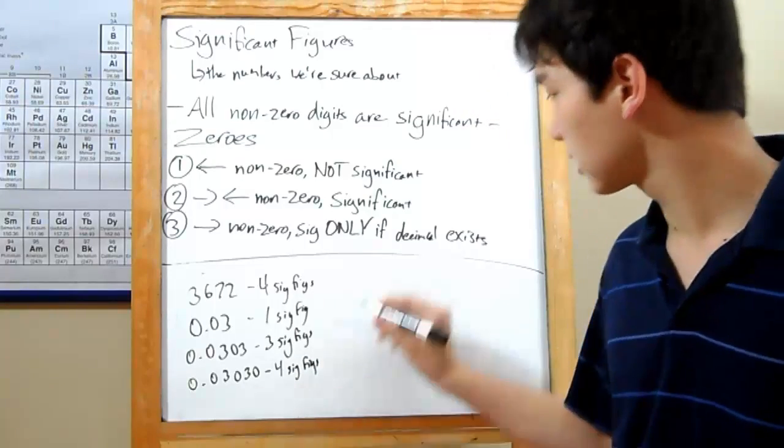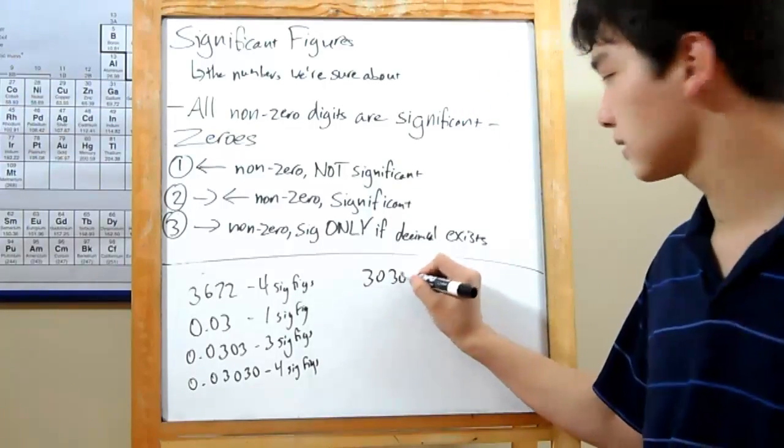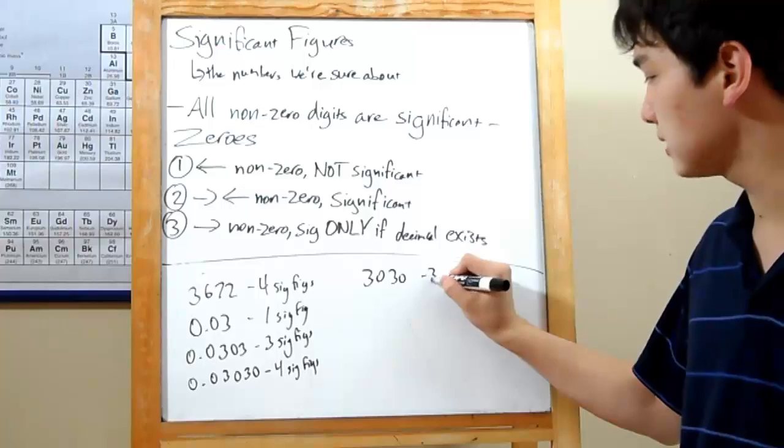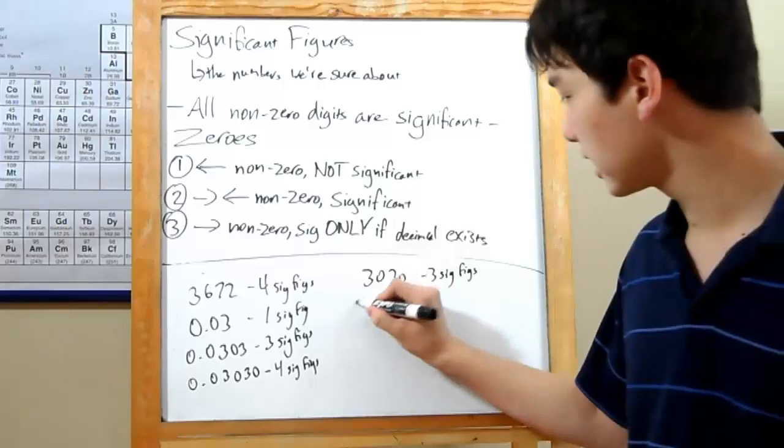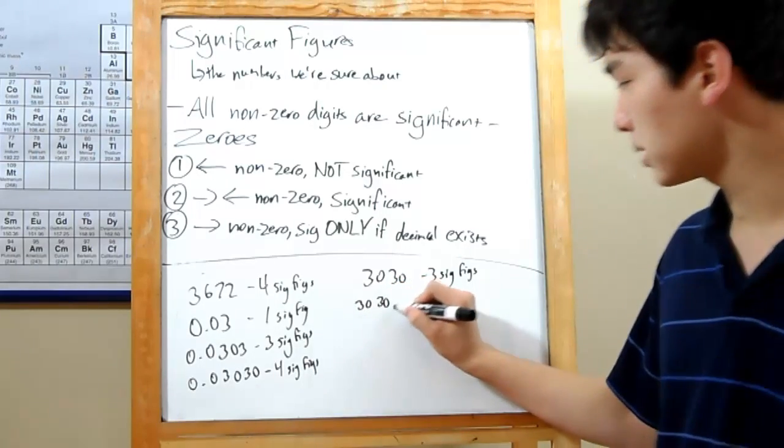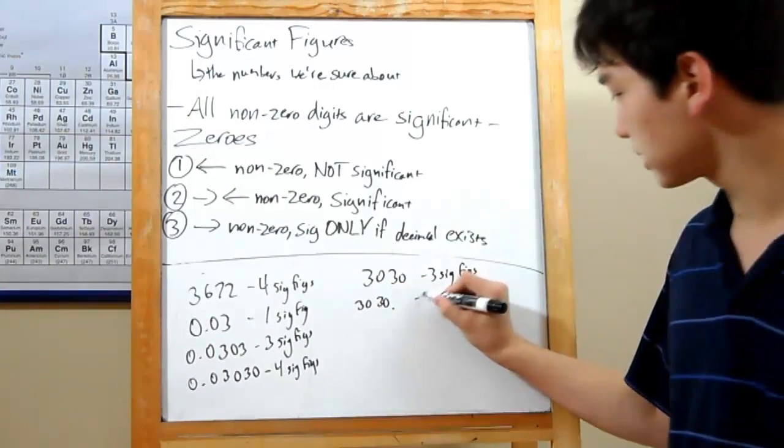But if you've got a number like 3030, just like that, you've only got three sig figs. That's because there's no decimal point anyway. If you wanted four, you could either write 3030 and then put a decimal point at the end for four sig figs.